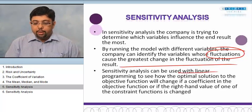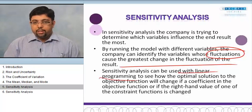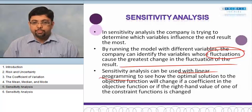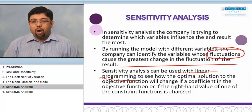That's where we use linear programming. Linear programming is something that is beyond the scope of the CMA syllabus. It sees how the optimal solution of the objective function will change if a coefficient in the objective function or if the right-hand value of one of the constraint functions is changed.